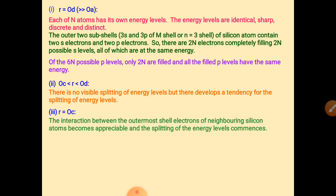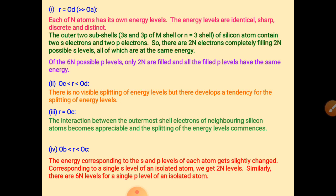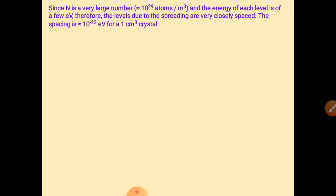The interaction between the outermost shell electrons of neighboring silicon atoms becomes appreciable, and the splitting of energy levels commences. Since 2n electrons don't completely fill the 6n capacity, electrons can be removed from that shell and more electrons from other atoms can enter those energy levels.